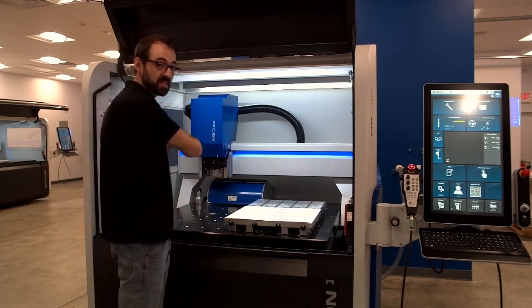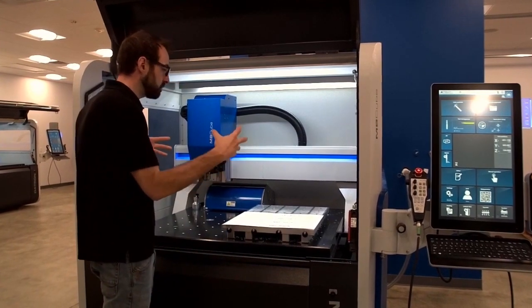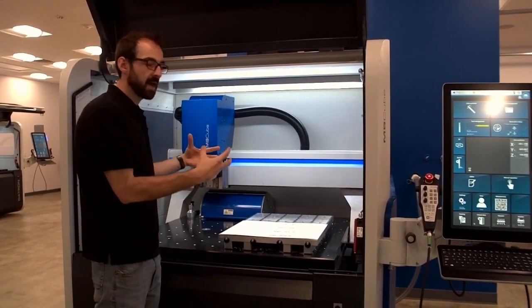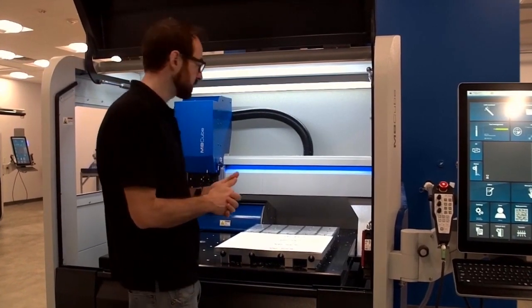The construction of the machine: we have a rigid steel gantry and a polymer concrete table. Very rigid, but allows us to have very nimble, fast movement. Great acceleration characteristics on the M8 Cube.